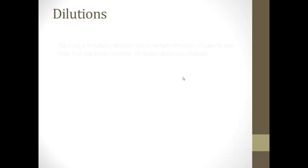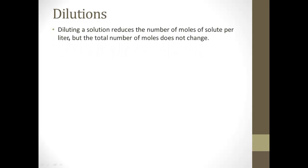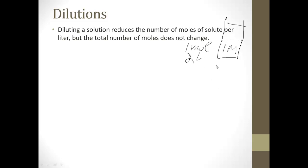The last thing we need to think about is making dilutions. Sometimes you'll have too strong a concentration and you'll need to dilute it. Diluting a solution reduces the number of moles of solute per liter, but the total number of moles does not change. For example, one liter of a 1 molar salt solution contains 1 mole of salt. If we dilute it by adding a second liter, we still have 1 mole in 2 liters, so it becomes 0.5 molar.